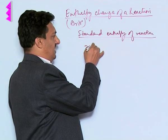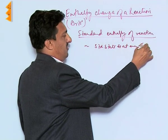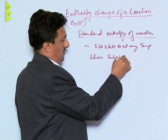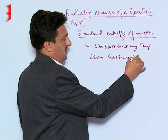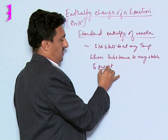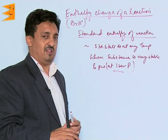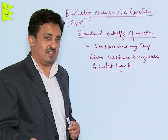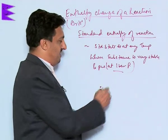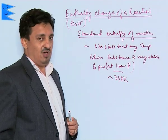Standard state is defined as the condition at any temperature when a substance is very stable and pure at 1 bar pressure. The temperature for standard state can vary from one substance to another because all substances cannot be very stable and pure at the same temperature. We usually express this data at 298 Kelvin, but what is more important is that the pressure is always 1 bar.